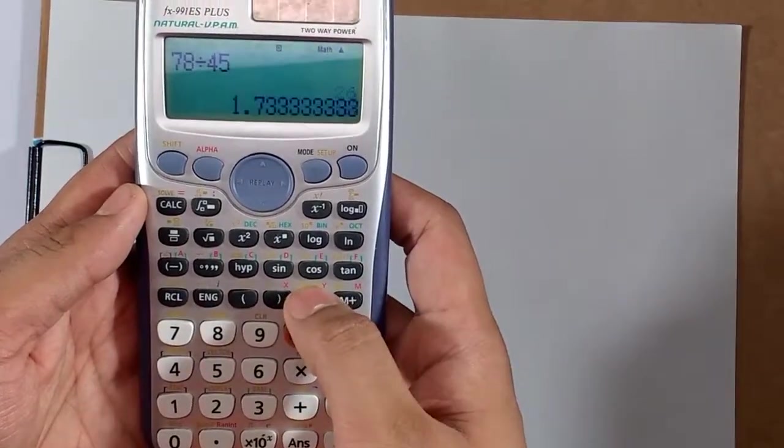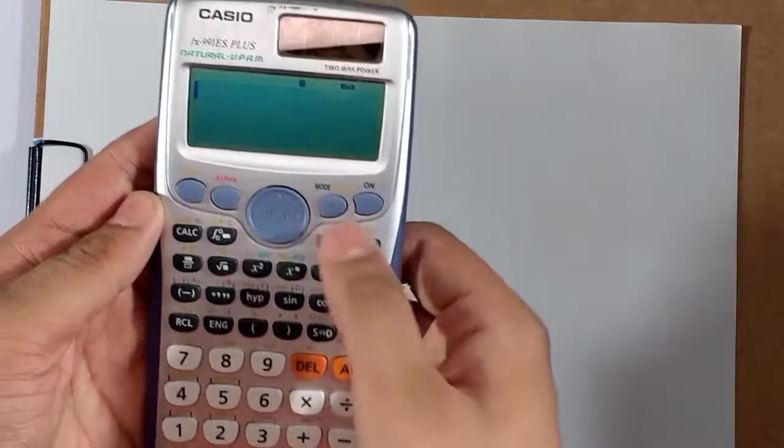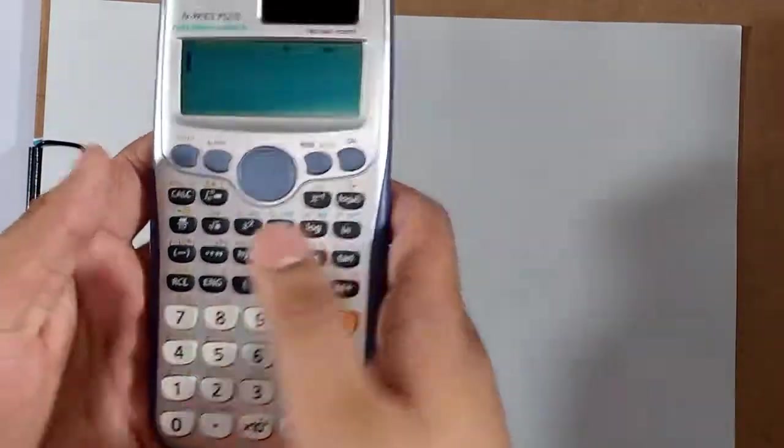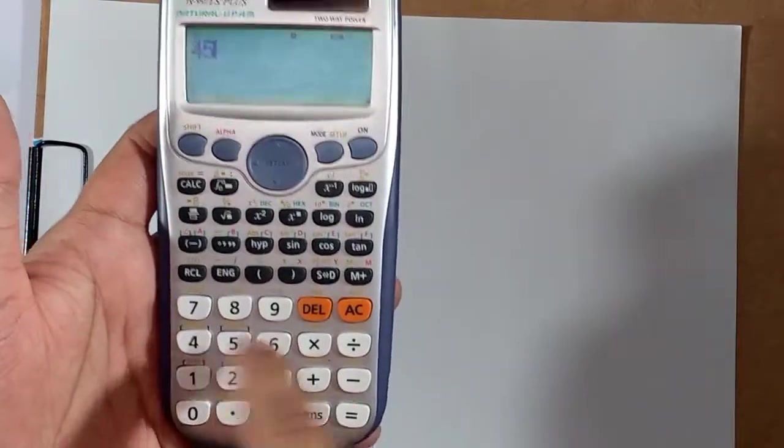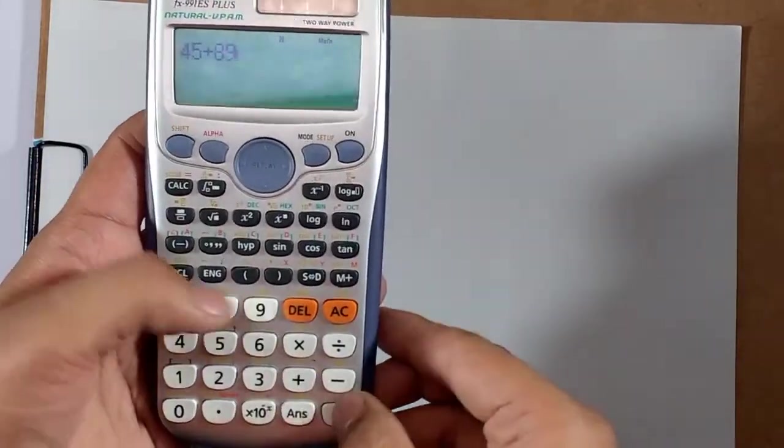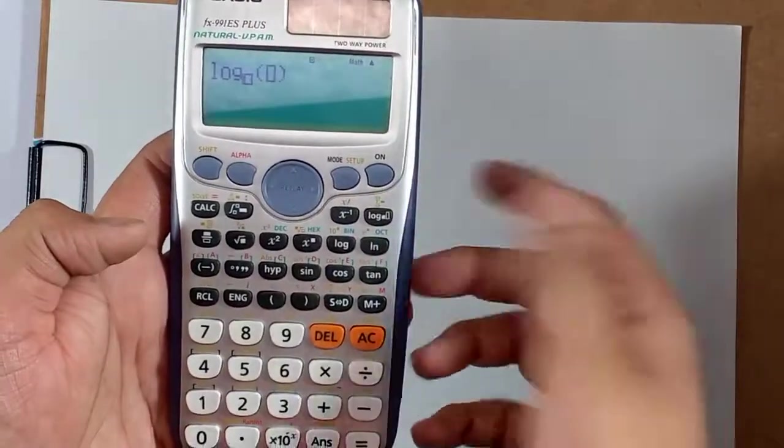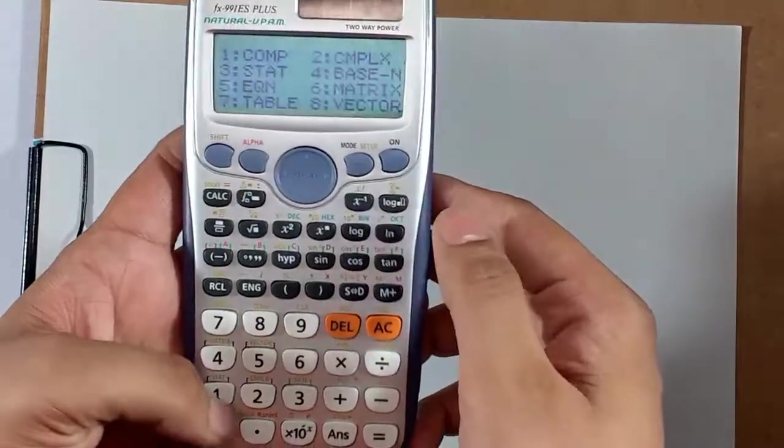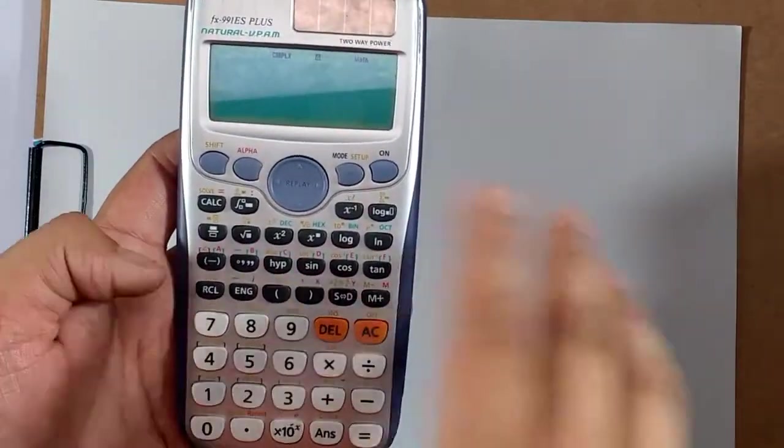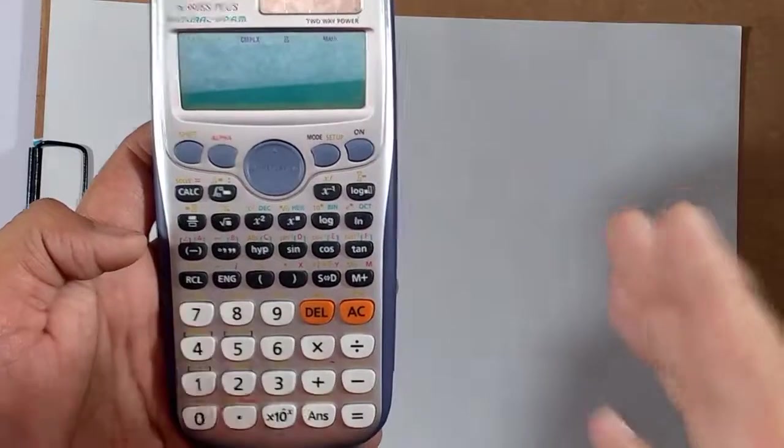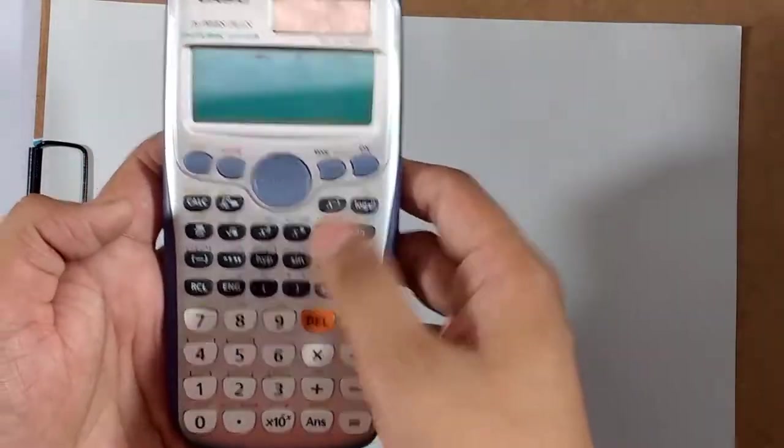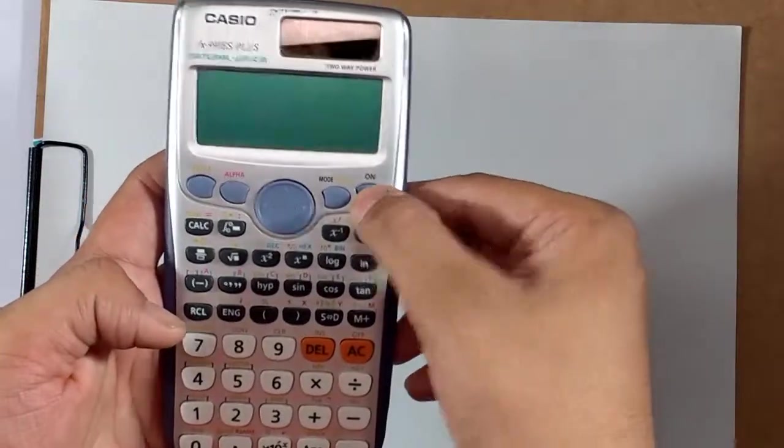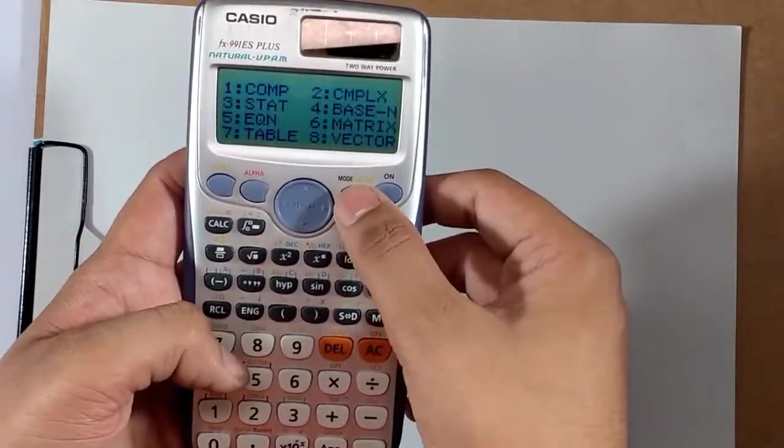Let's get into the mode setting. First is comp, in which all basic functions are like 45 plus 89. Second is complex. I'm not gonna get into details because I'm gonna cover it in the next tutorials. Third is stats, again next video.